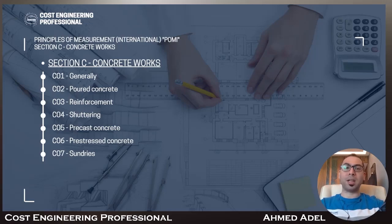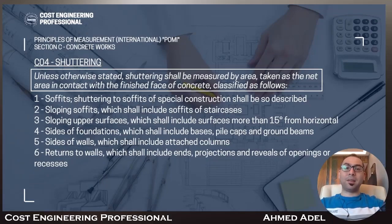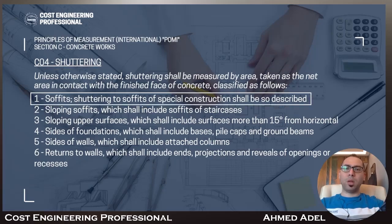Subsection C4 is shuttering. Unless otherwise stated, shuttering shall be measured by area, taken as the net area in contact with the finished face of concrete. It will be classified as follows. Number one: soffits — shuttering to soffits of special construction shall be so described, meaning if you have shuttering related to special construction, you must describe that.